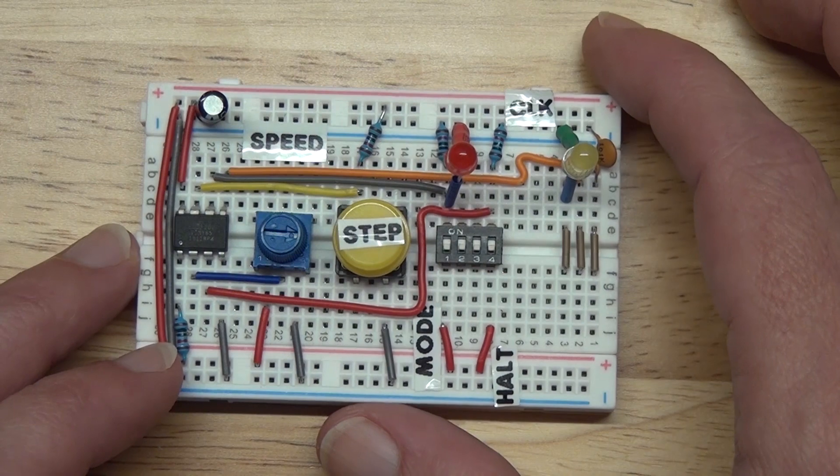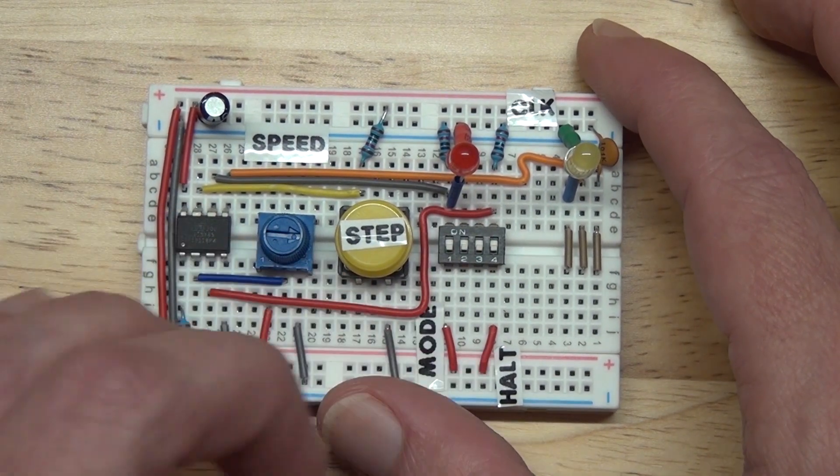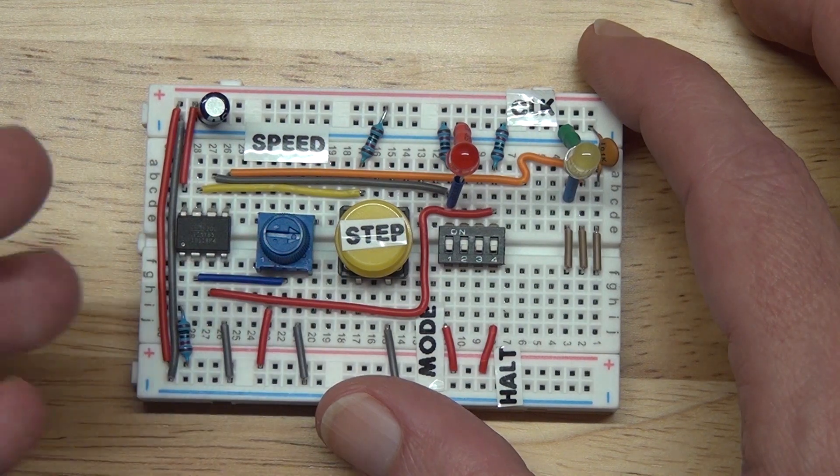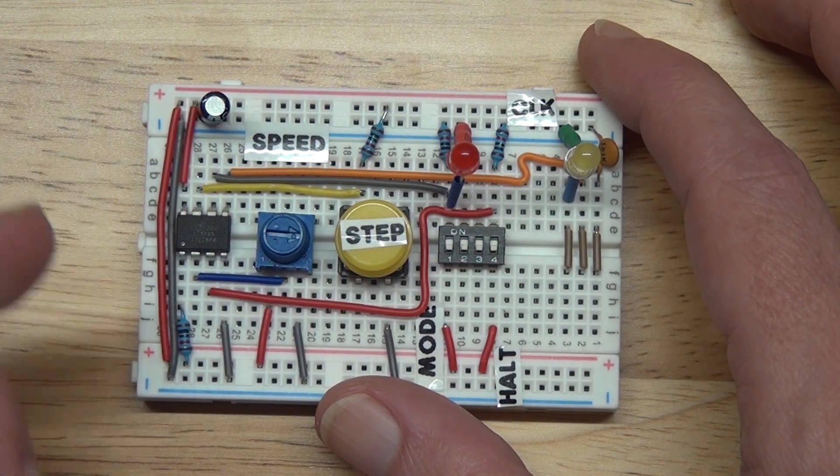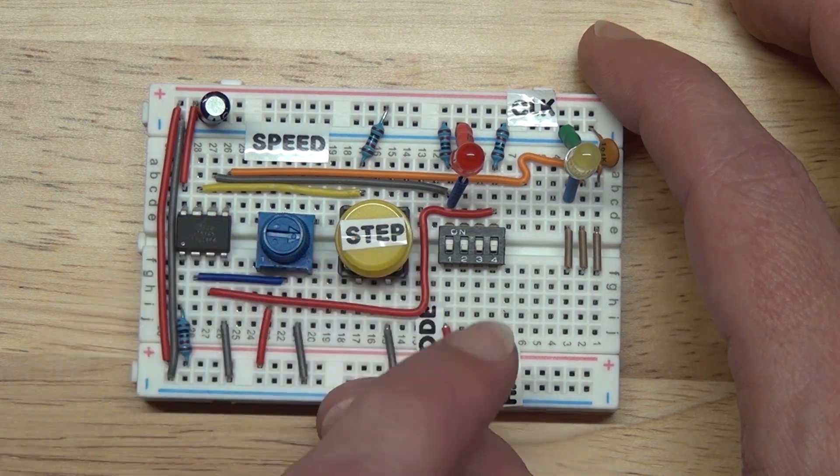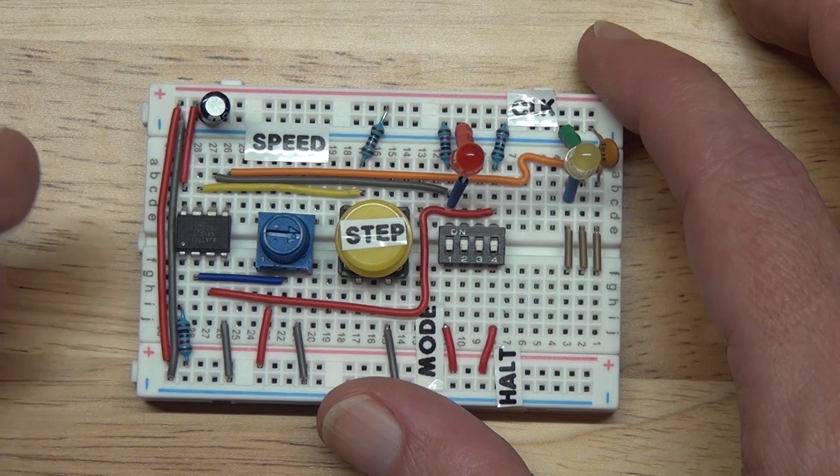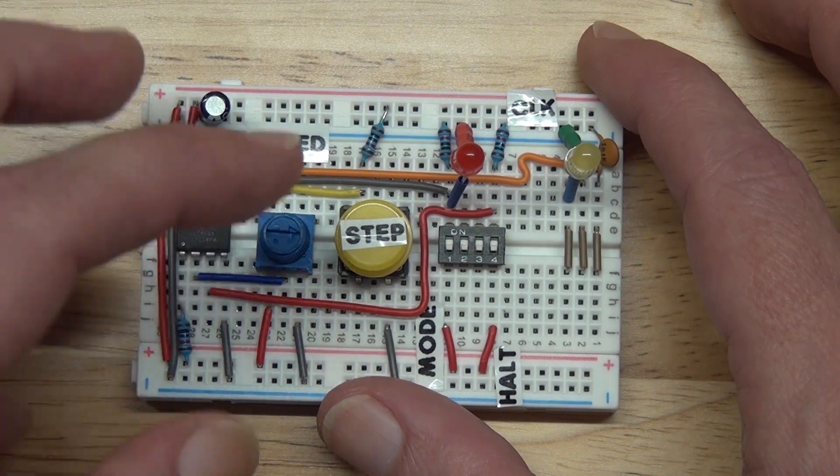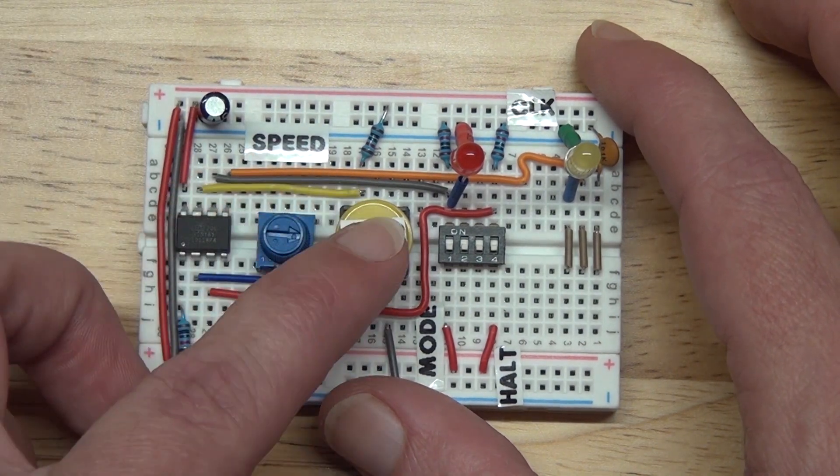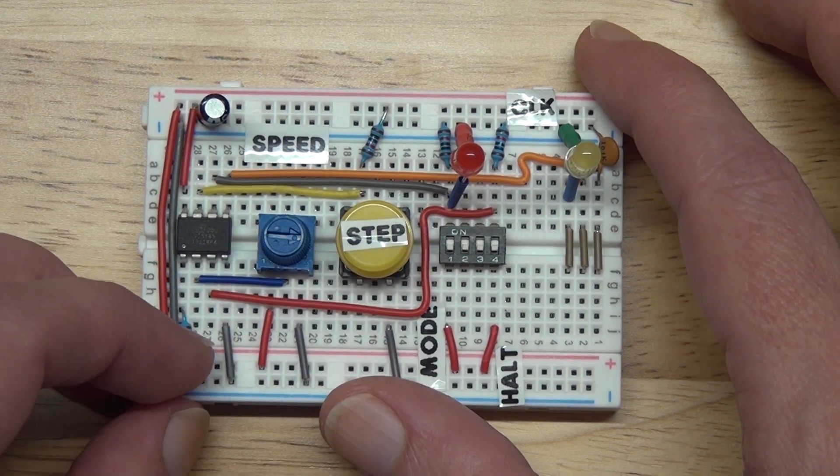I wanted this to be easy to build and easy to understand. And I think using software for some of the functions here just makes things a little easier to understand. It certainly simplifies the hardware over using like 555 timers. It's not more simple than a crystal oscillator, but for a testing clock, where you want to be able to single step and all that, this is a very simple design.